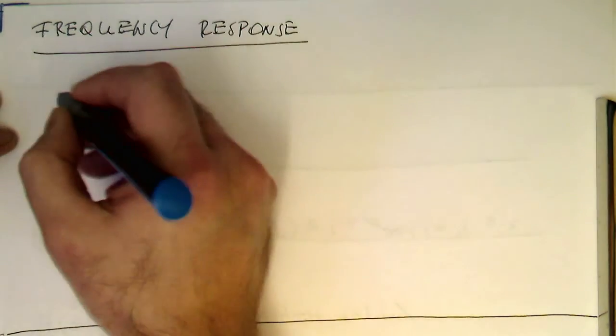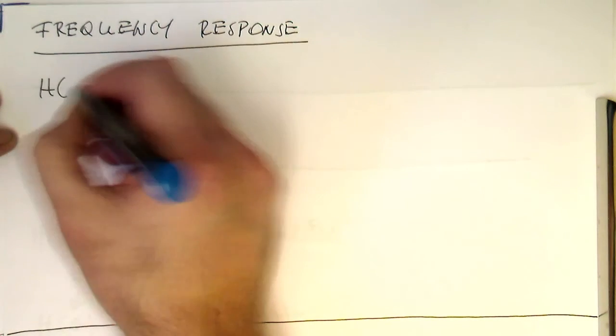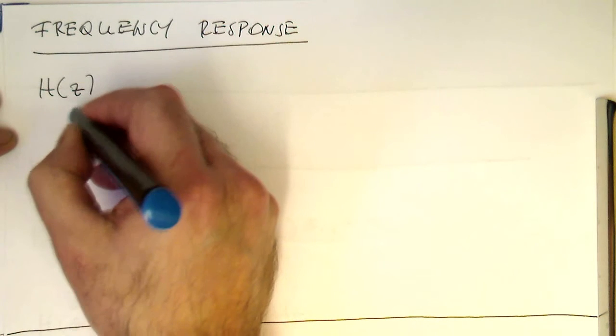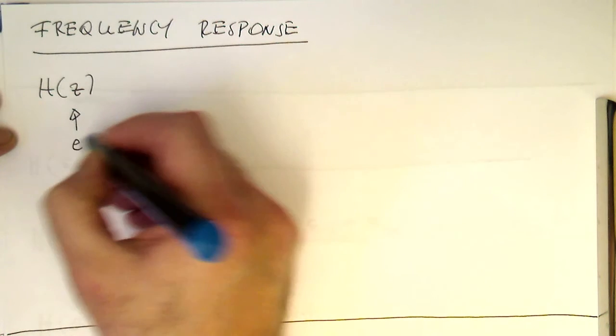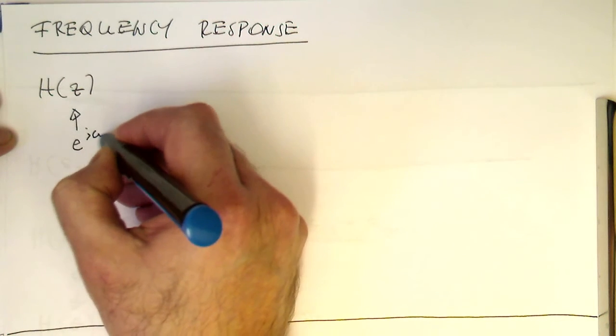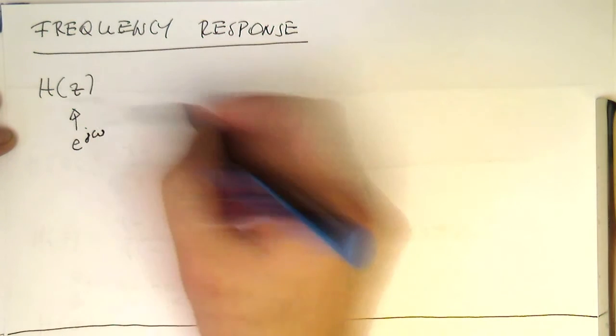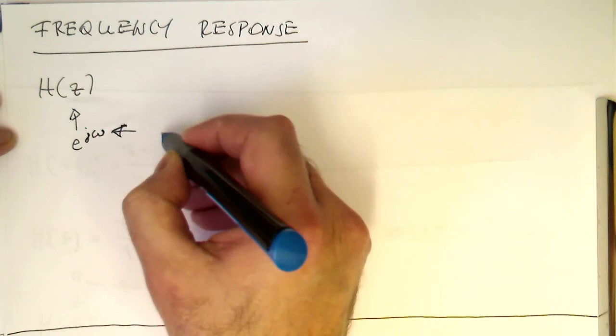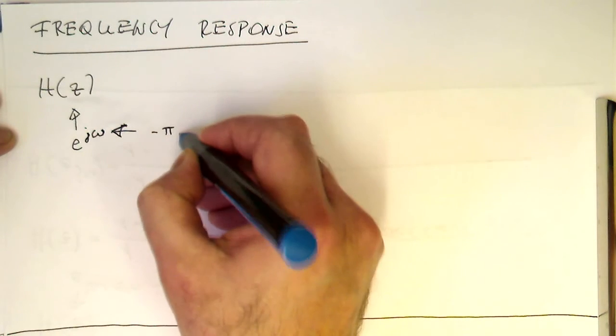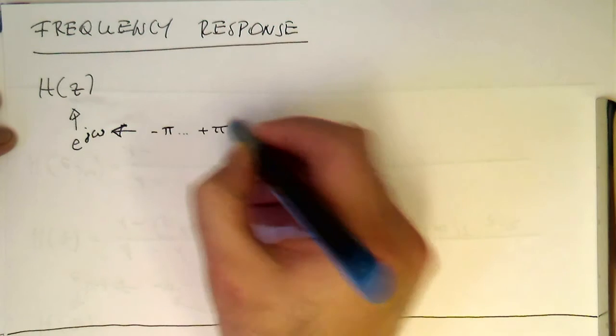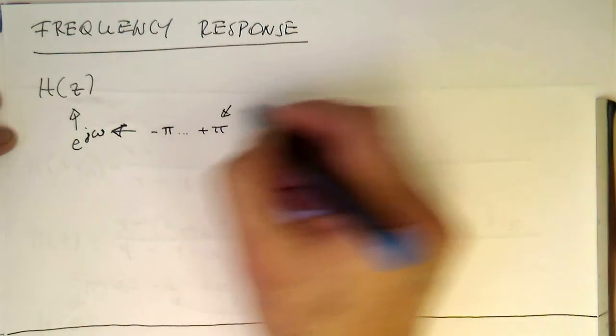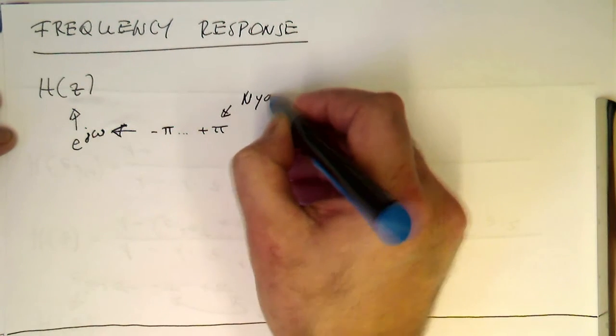So, remember the frequency response, if we have a digital filter H of Z, then the frequency response is just generated by substituting e to the j omega into this Z here, and in turn the omega runs from minus pi to plus pi, and pi is the Nyquist frequency.